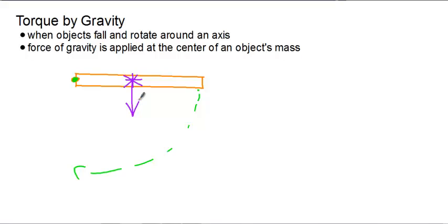So to find the torque here, our r value would be the distance from the axis of rotation to the center of mass. So again, torque would be Fg times r, but the r is not the total length of the board. It's the distance from the axis of rotation to the center of mass.